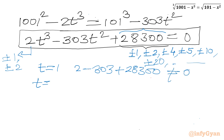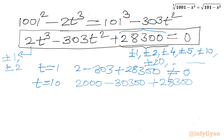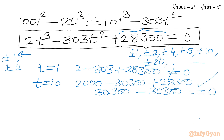Let us apply t equal to 10 directly. So 2 times 10 cube is 2000, minus 303 times 100 is 30300, plus 28300. Checking: 2000 minus 30300 plus 28300 equals 0. Yes, it satisfies. So t equal to 10 is our base solution.